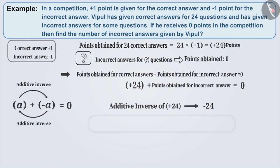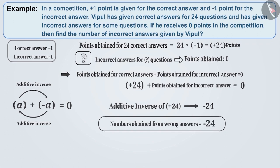Therefore, we can say that Vipul has received minus 24 points for incorrect answers. Since for each incorrect answer minus 1 point is given, Vipul must have answered 24 questions incorrectly.